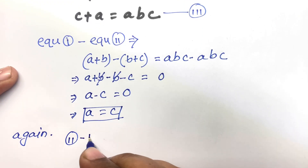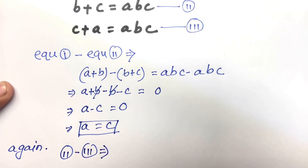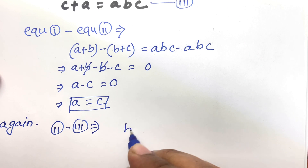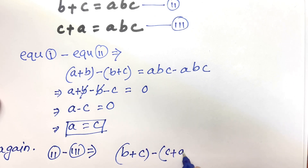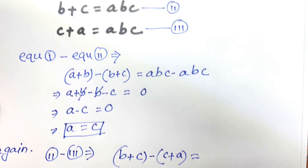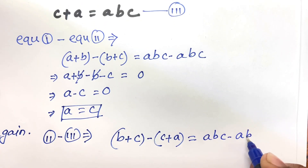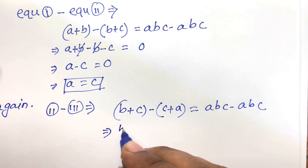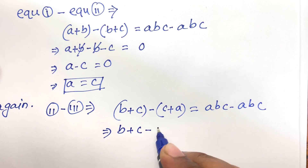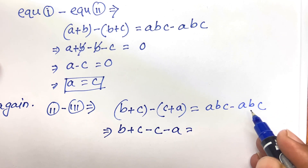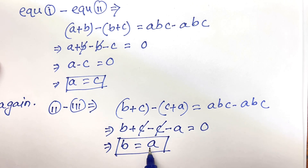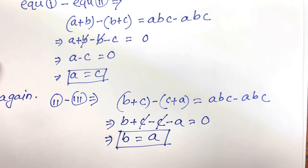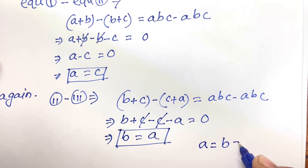Again, say equation 2 minus equation 3. So equation 2 is B plus C, minus C plus A, equals ABC minus ABC, which equals zero. Now C and C cancel, so B minus A equals zero, meaning B equals A. So I find out B equals A, and we already have A equals C, so I can say easily A equals B equals C.